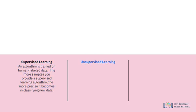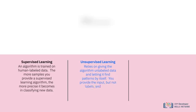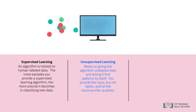Unsupervised learning, another type of machine language, relies on giving the algorithm unlabeled data and letting it find patterns by itself. You provide the input but not labels and let the machine infer qualities. The algorithm ingests unlabeled data, draws inferences, and finds patterns. This type of learning can be useful for clustering data, where data is grouped according to how similar it is to its neighbors and dissimilar to everything else. Once the data is clustered, different techniques can be used to explore that data and look for patterns.